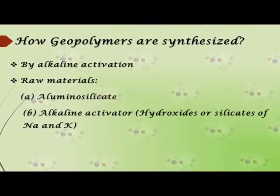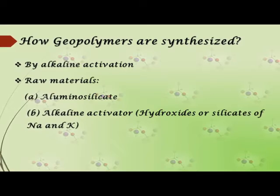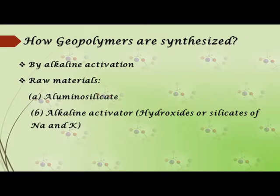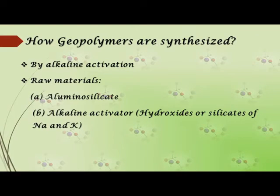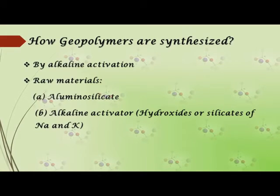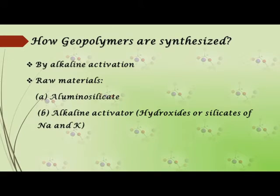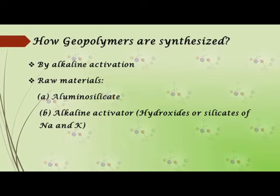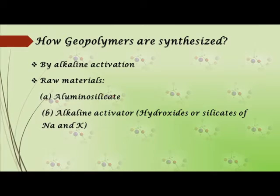Geopolymers are synthesized by alkaline activation of aluminosilicate materials. An aluminosilicate material and an alkali solution are the essential raw materials. Aluminosilicate can be of natural or synthetic origin, and a mixture of sodium hydroxide and sodium silicate is used as the activator.